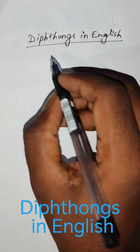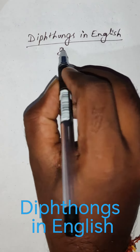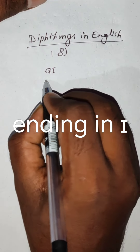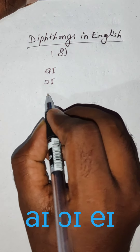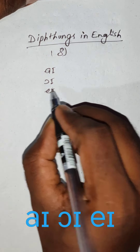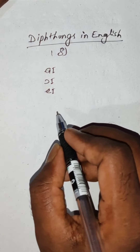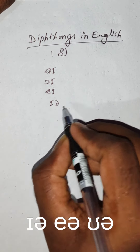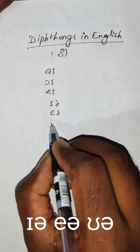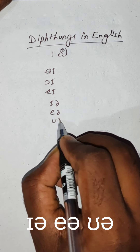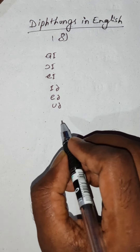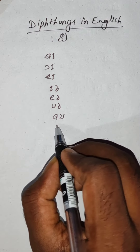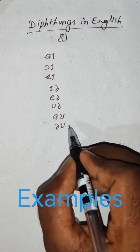We have eight diphthongs. Ending in 'I' we have: 'aai', 'oi', and 'ay'. Ending in 'a' we have: 'ear', 'air', and 'oo'. Ending in 'oo' we have: 'aau' and 'aau'.